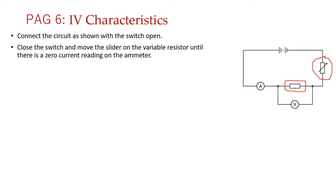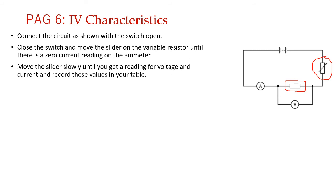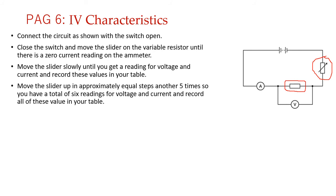The circuit includes a variable resistor. Start by adjusting it until you get the lowest possible current reading on the ammeter — as close to zero as possible. Then keep varying the variable resistor and each time make a note of the voltage and current readings and tabulate them. Make sure you get at least six different values of voltage and current.